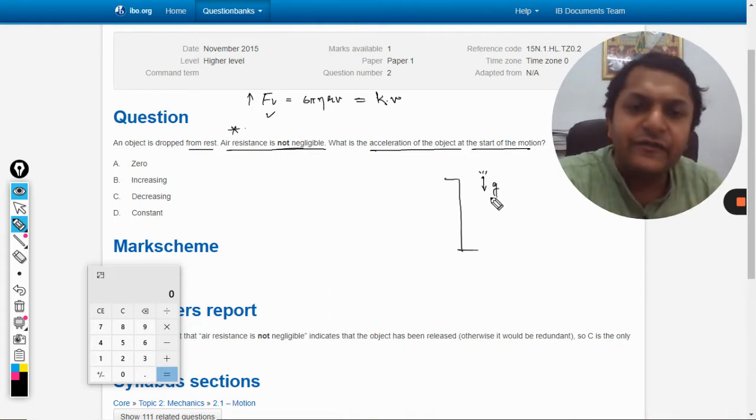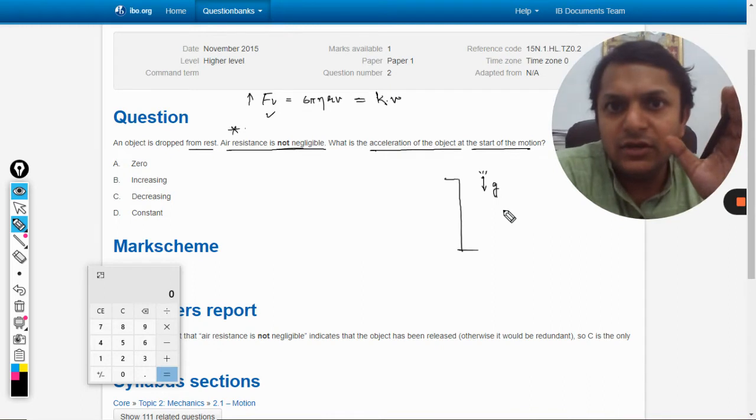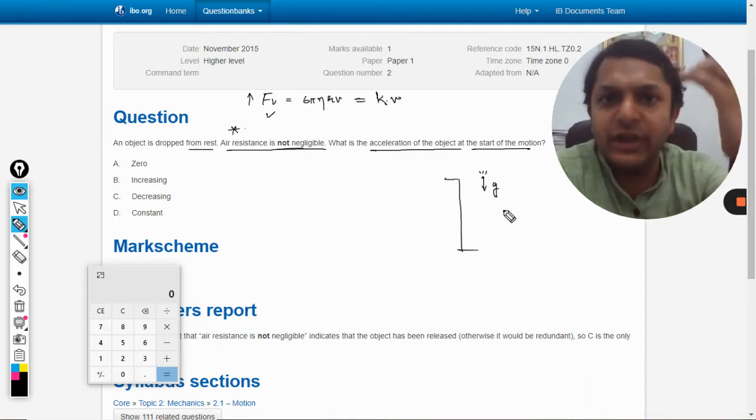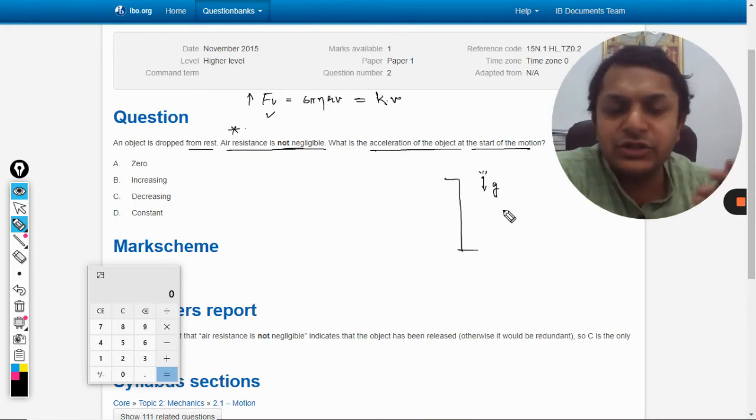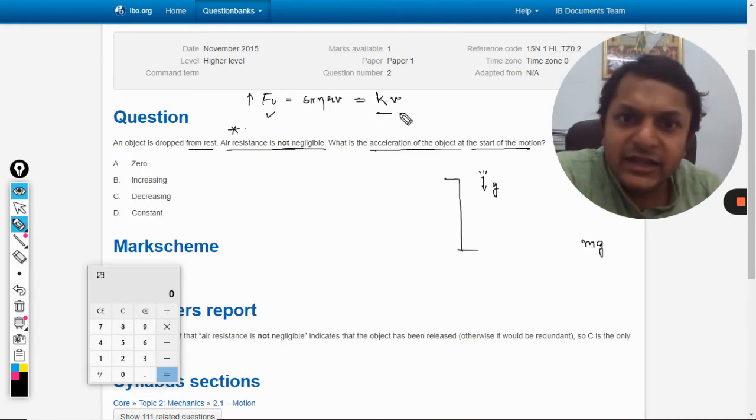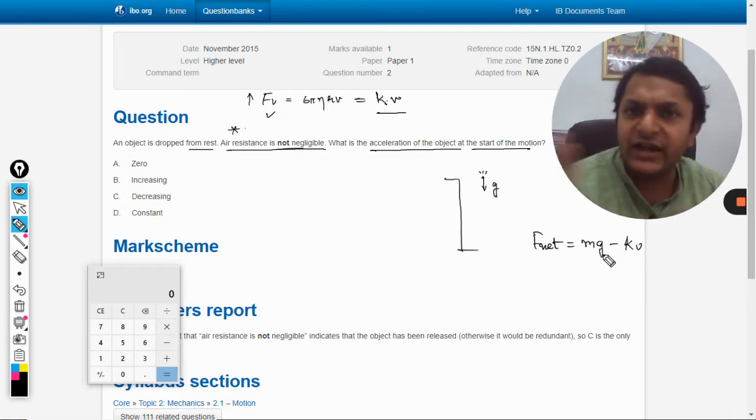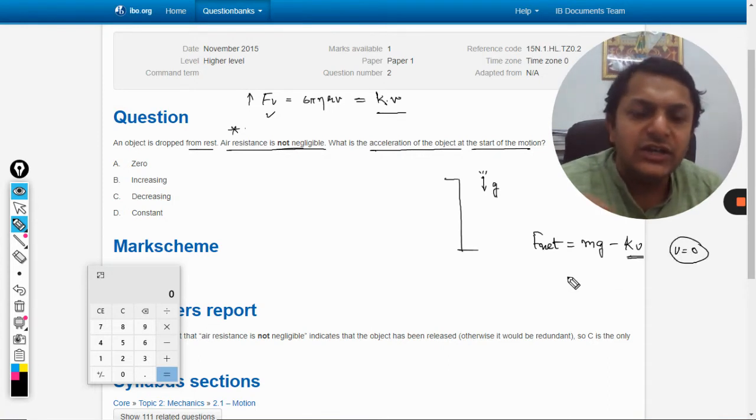Obviously it would be first acted upon by gravity, so there will be acceleration due to gravity. It will start moving with this because initially there is only one force, that is mg. The net force is mg minus kv - this is Fnet. Now you can see, kv is the viscous force, so if velocity is zero initially, your force is actually mg.